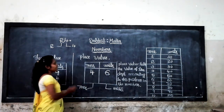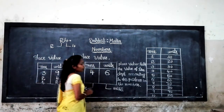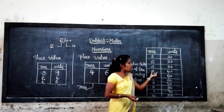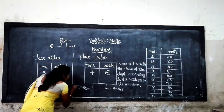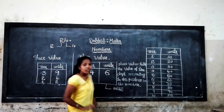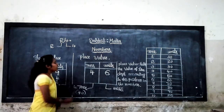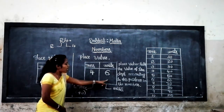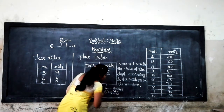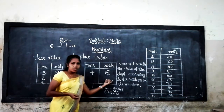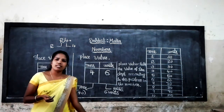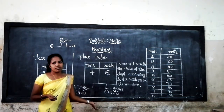I hope you understand. In 46, there are 4 tens and 6 units. 4 tens is equal to 40 units — that means 40. So the place value of 4 is 40. Then for the 6 units: 6 units is equal to 6. We write 6 because in the units place, numbers have the same place value — the number itself. There are no changes in the units place number.